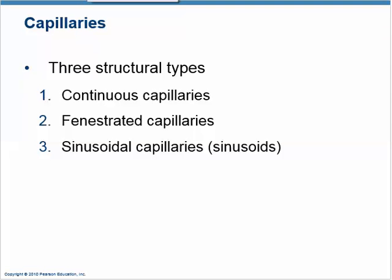Capillaries are the exchange vessels — this is the place where gases, nutrients, waste products, etc. enter the tissues, leave the tissues, go into the kidneys for disposal, go into salivary glands, go into the lungs, etc. There are fundamentally three types of capillaries. The most common are the continuous capillaries.